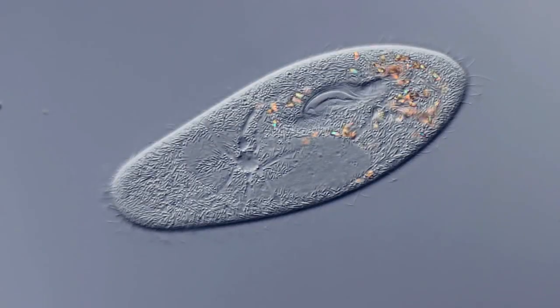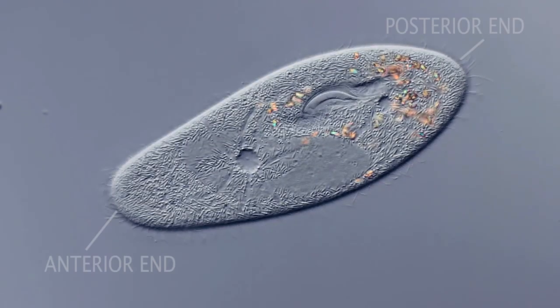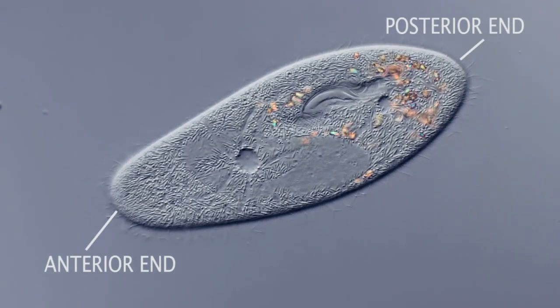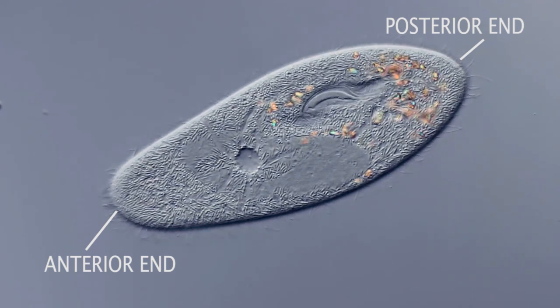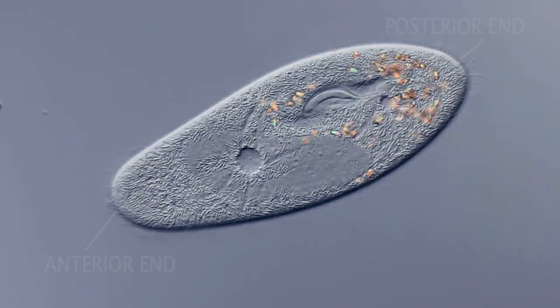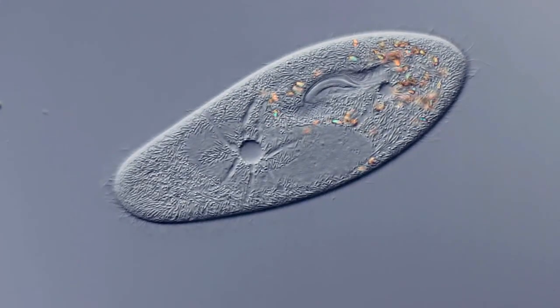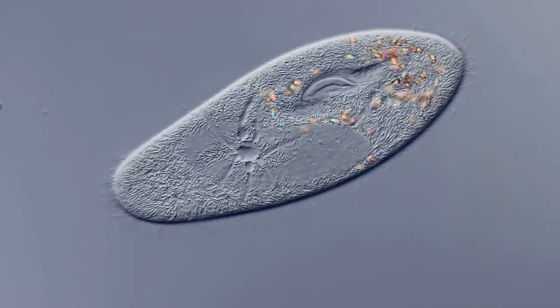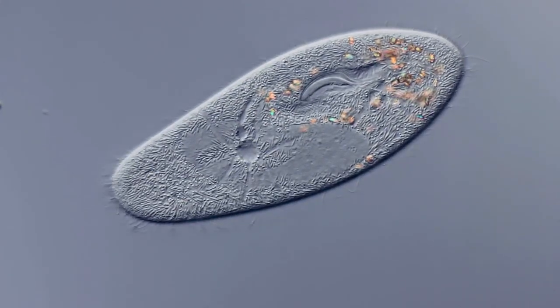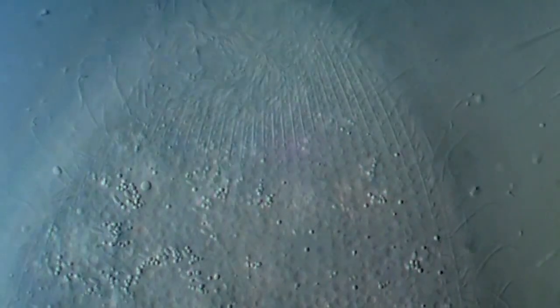Since paramecium swims with the slender but blunt end foremost, we are able to distinguish this as the anterior end. The opposite end, which is thicker but more pointed, represents the posterior end, while the side containing the oral groove may be designated as oral or ventral, the opposite side aberral or dorsal. The modal organs are fine thread-like cilia regularly arranged over the surface.